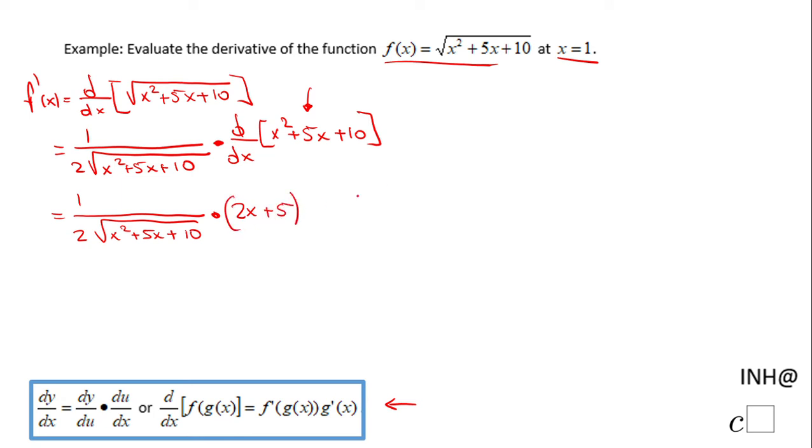Let's put a parenthesis. Now, don't forget, we have to do the value at x equals 1. So I'm just going to plug 1 in. I'm not going to do any other simplification. And I'm going to have 1 over 2 times square root of 1 squared plus 5 times 1 plus 10 times 2 times 1 plus 5.